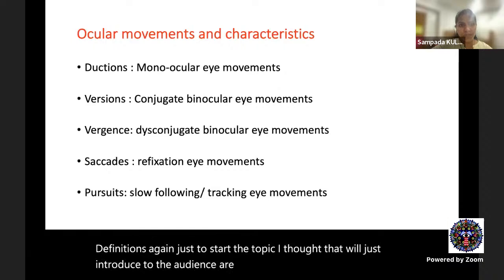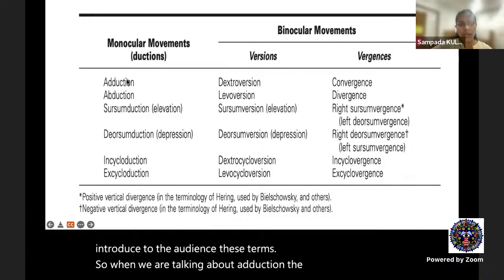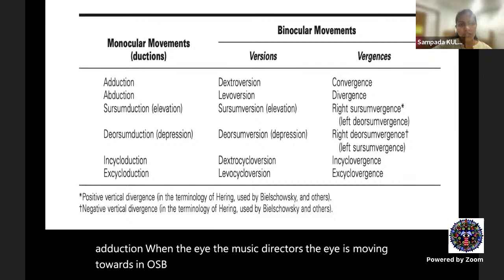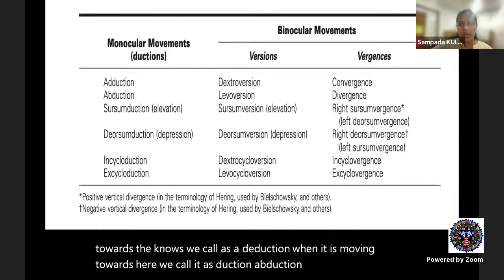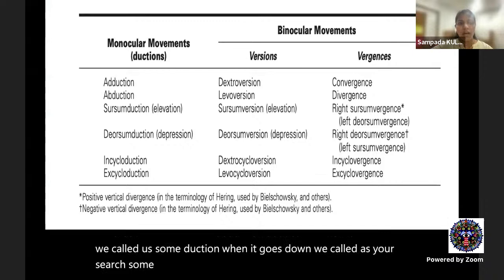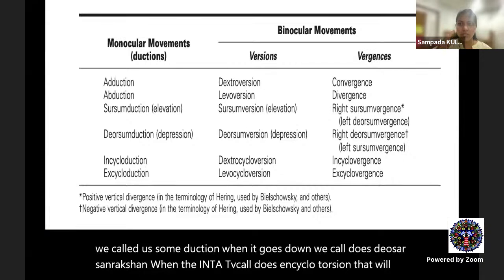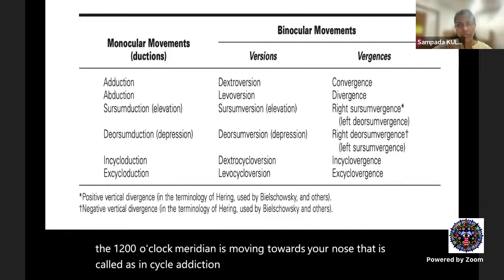When discussing ductions: when the eye moves towards the nose, we call it adduction; towards the ear, abduction; upward, sursumduction; downward, deorsumduction. When the eye intorts — the 12 o'clock meridian moving towards the nose — that is incycloduction. When the 12 o'clock meridian moves outward, it is excycloduction.